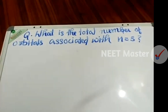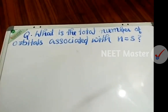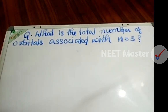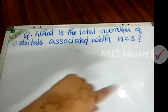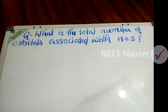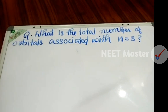Now, what is the total number of orbitals associated with n equal to 3? If you have the principal quantum number n equal to 3, how many orbitals do you have?